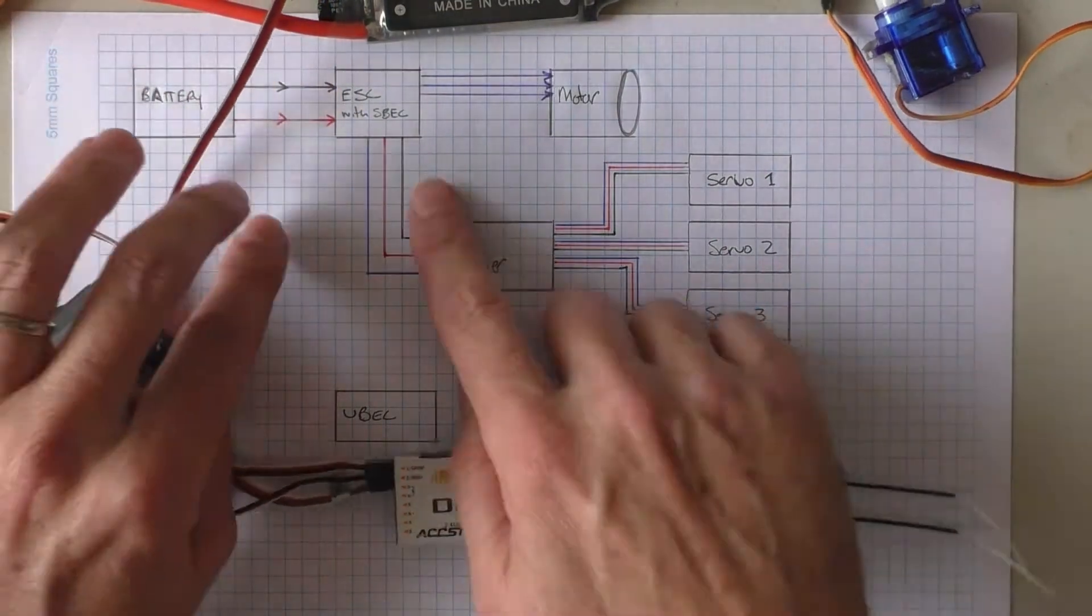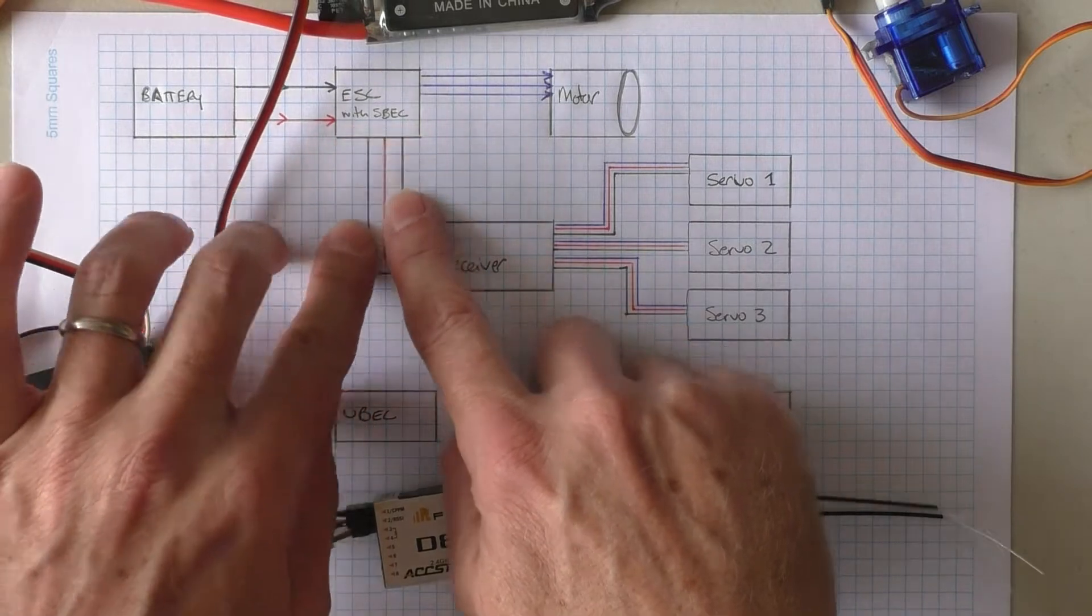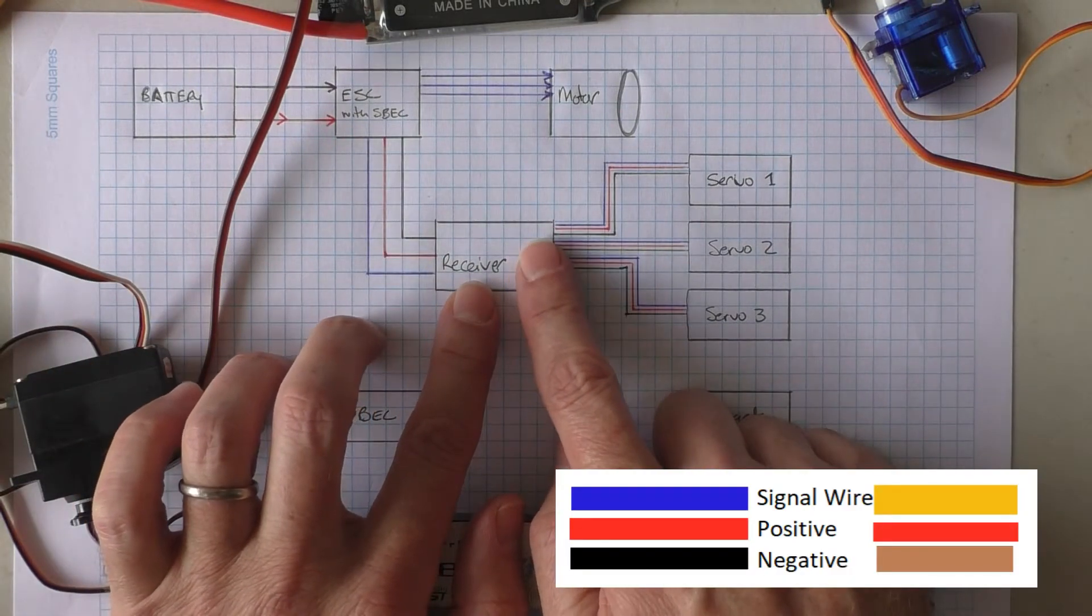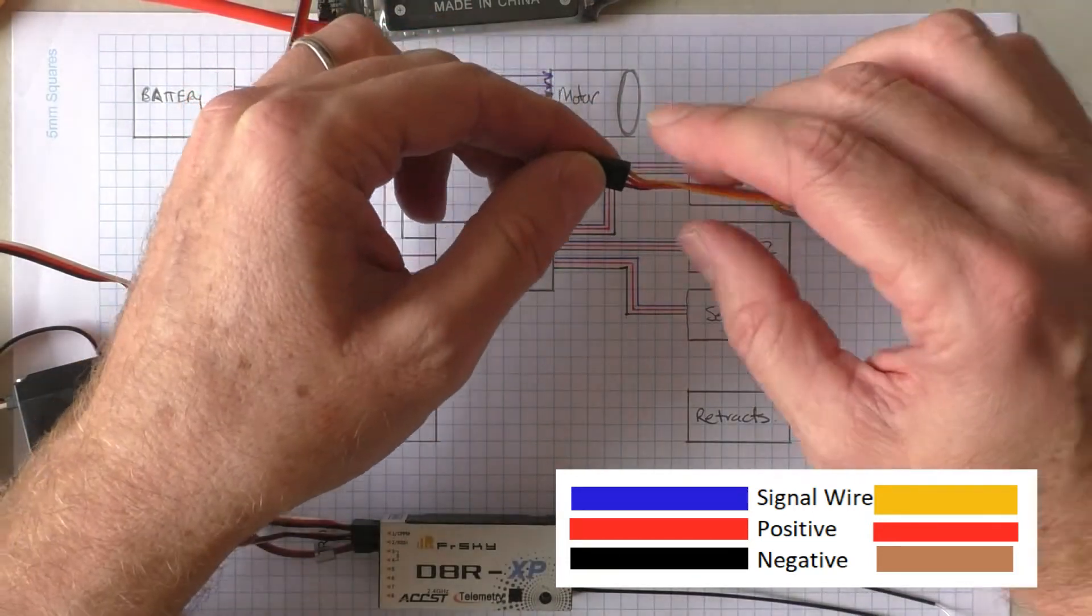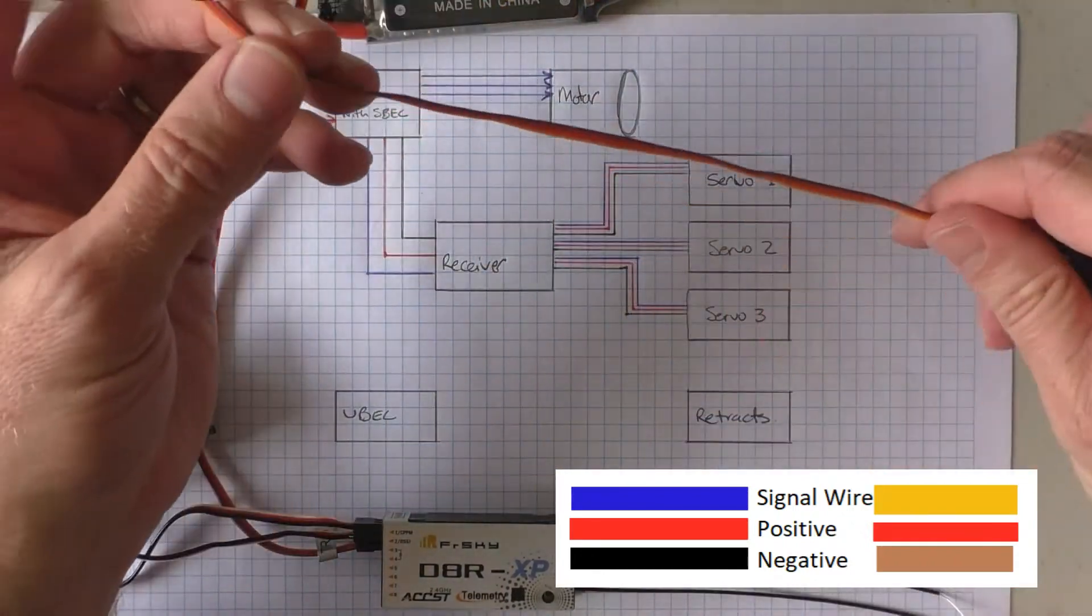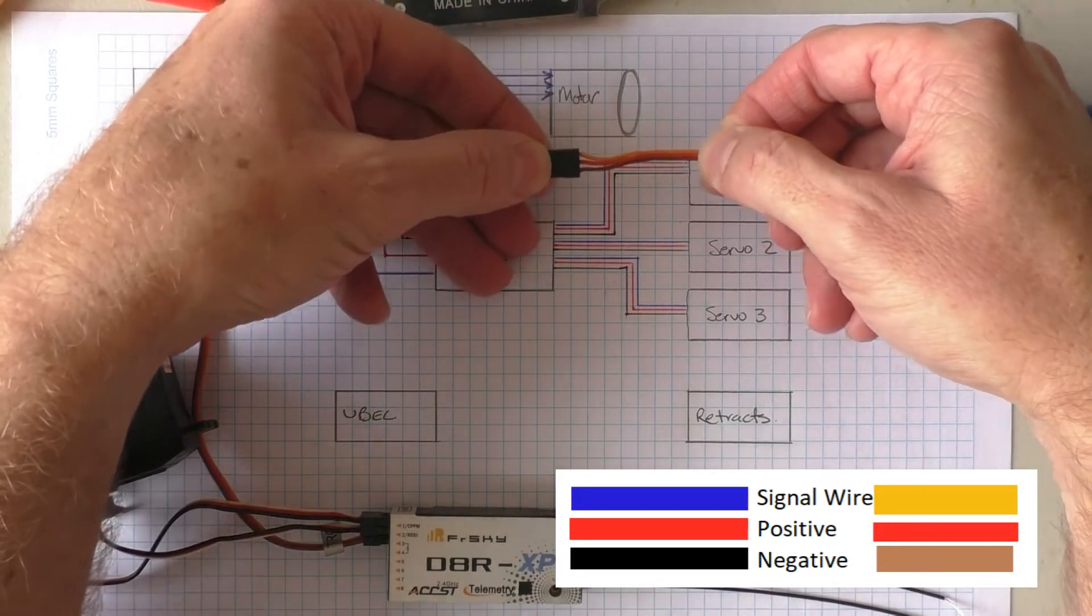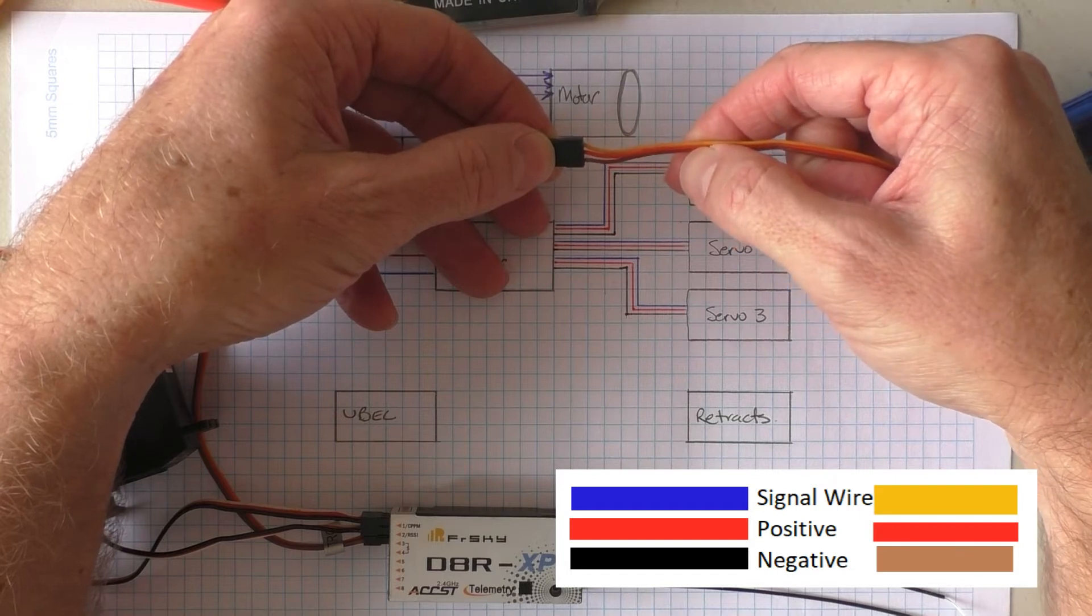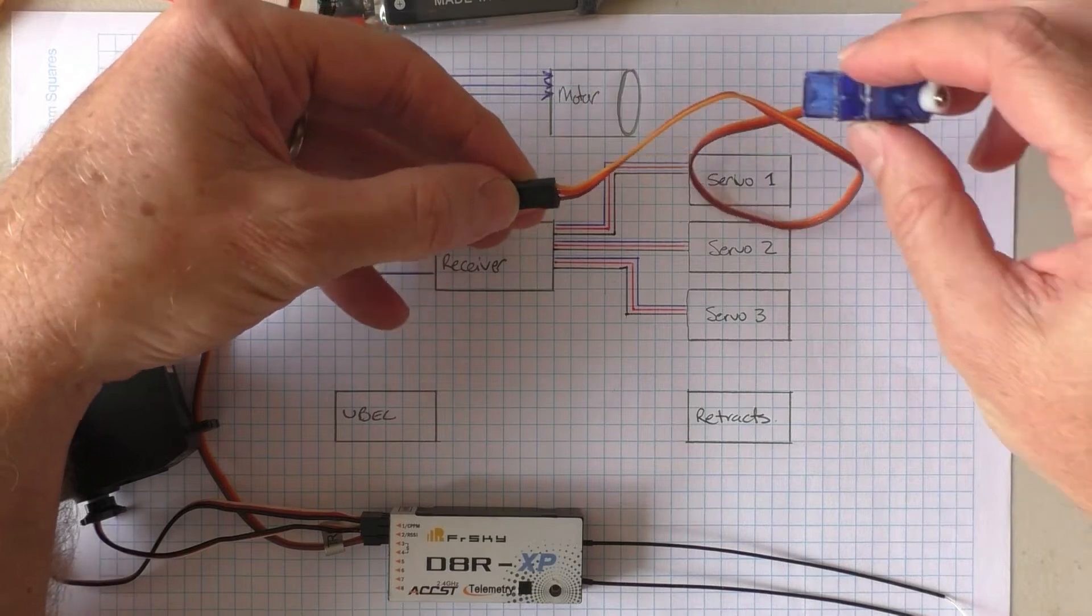So here's the diagram. Power goes to the motor. However, the ESC also provides power to the receiver, and the receiver then provides both power and the signal to the servos. The signal wire is the yellow wire, the positive is the red, and the negative is the brown at the bottom there.